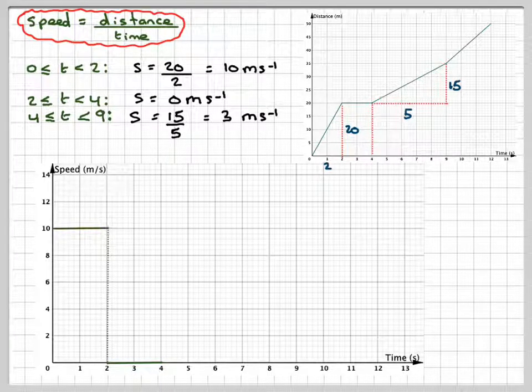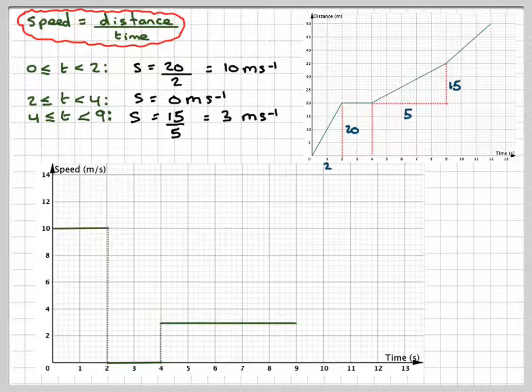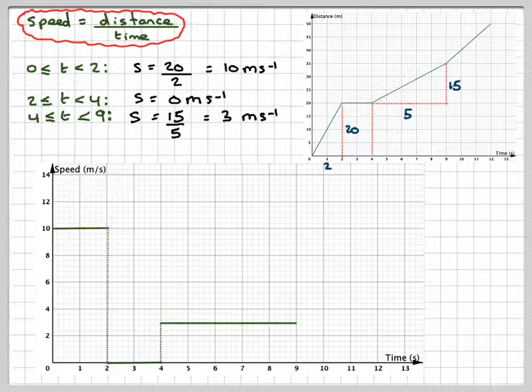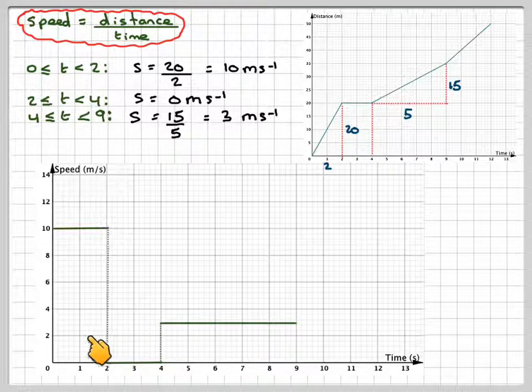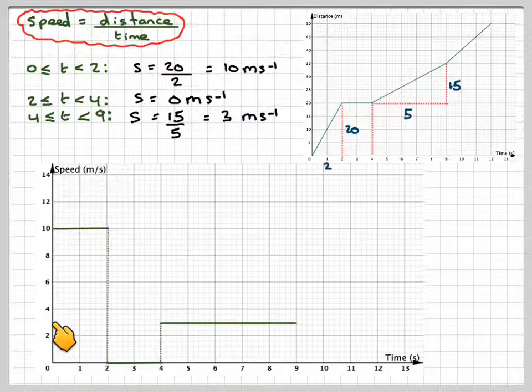For the next 5 seconds, from 4 to 9, we need to draw in a line here at 3 meters per second.